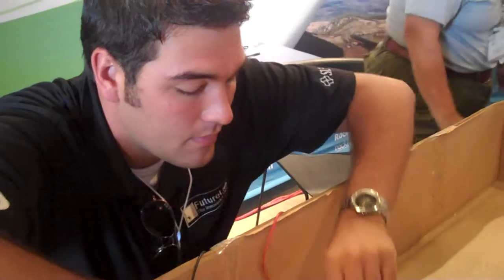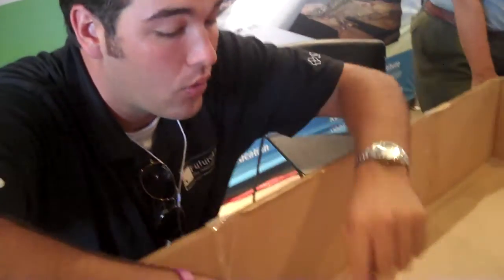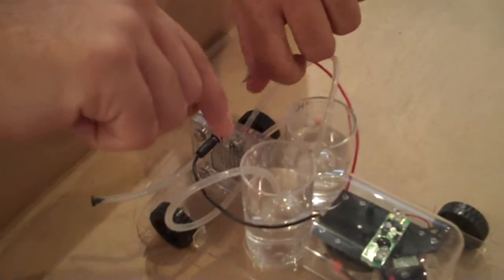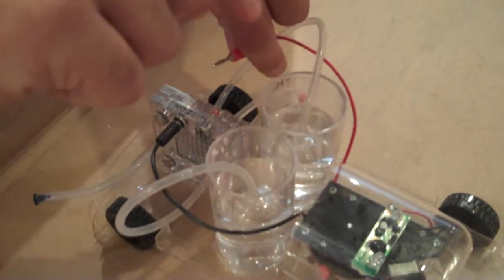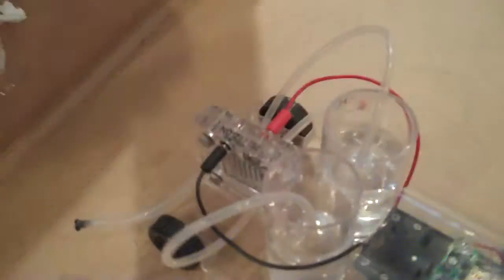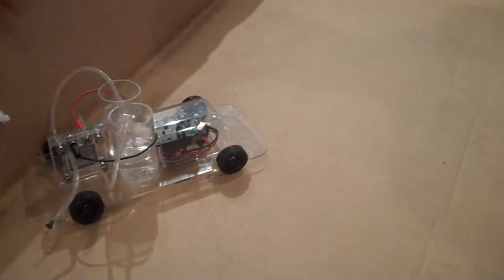So then when I unplug these and I close this circuit back up, the second I get this red one in here, it's going to close that circuit and it's going to use that hydrogen to fuel the vehicle. And now it's running off of the hydrogen.